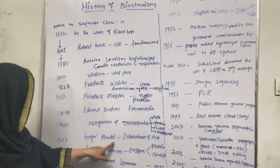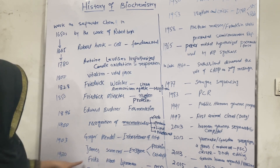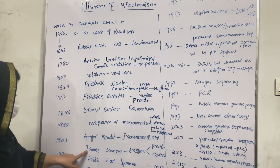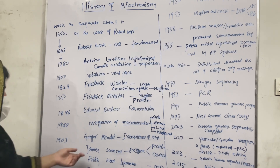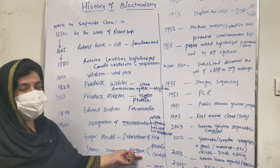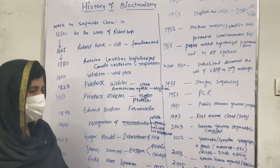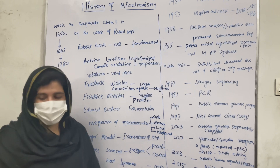In 1920, James Sumner gave the concept of an enzyme. He showed that an enzyme is basically a protein in nature and also acts as a catalyst.